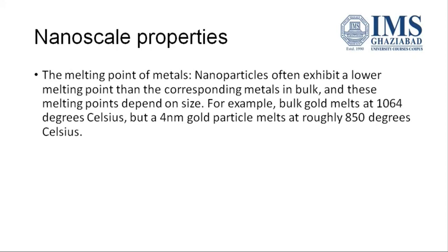Coming to nanoscale properties, as discussed in my introduction video to nanotechnology, nanoscale properties are quite different compared to those the substance has in bulk. For example, the melting point: nanoparticles generally exhibit a lower melting point than the same metal in bulk form. This depends upon size — for example, bulk gold melts at 1064°C, whereas a 4 nm nanoparticle melts roughly at 850°C.